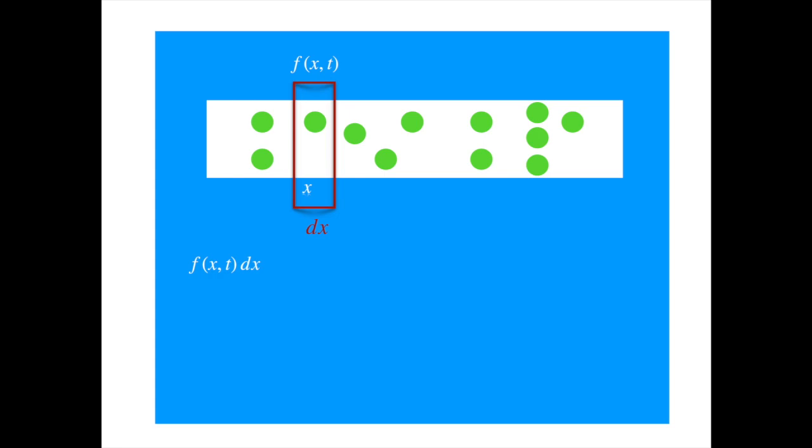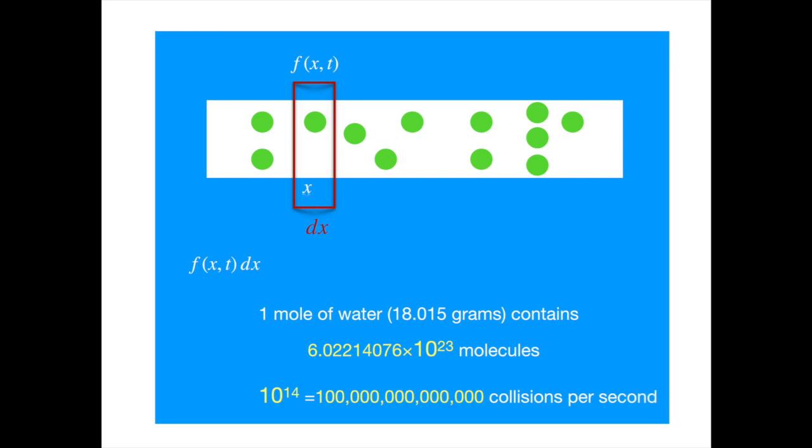If the liquid is, say water, then we know from the Avogadro's constant that each mole, which is about 18 grams, this is roughly speaking 300 to 400 drops of water, contains an enormous number of molecules. And each Brownian particle will be experiencing about 100 trillion collisions in a second.